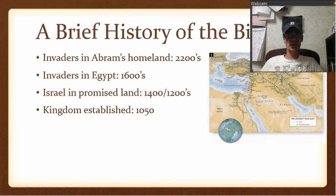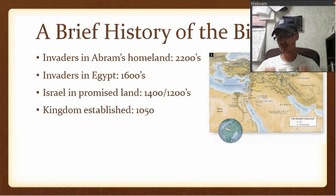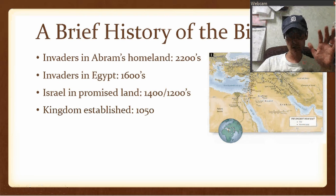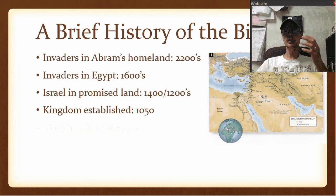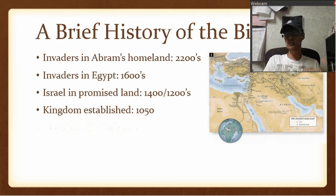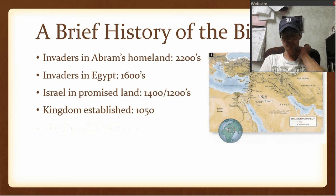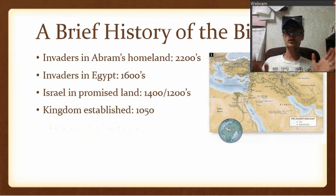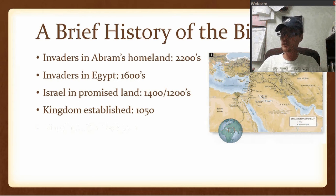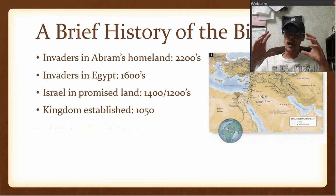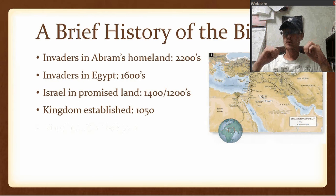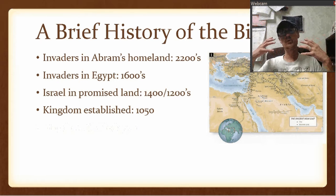The events of Joshua and Judges happen, and then 1 Samuel picks up with the people wanting a king. Saul becomes king, and the kingdom is established around 1050 BC. After Saul, David comes to power. David is kind of the symbol of a good king, and the prophets used him to point toward the way Jesus would be the perfect king whose reign would never end.